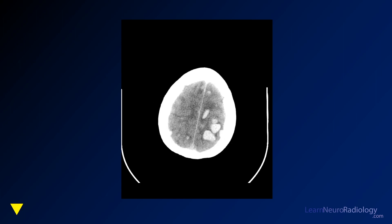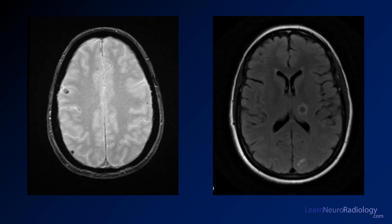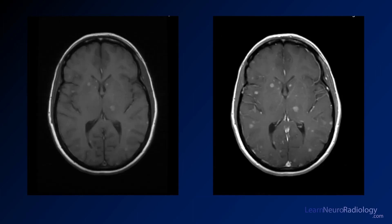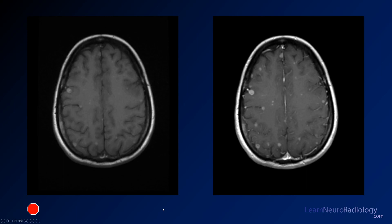This is the last CT. I'm going to go ahead and give you an MR now. Here you see a gradient image on the left and a FLAIR on the right. These are pre-contrast on the left and post-contrast on the right. More pre- and post-contrast, just at a higher level.